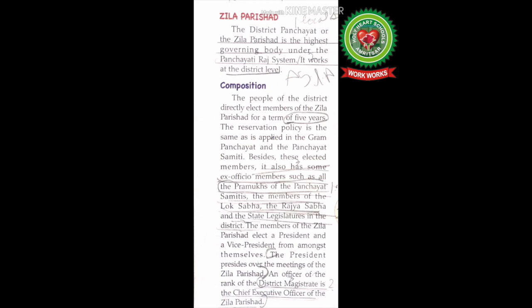The president presides over the meetings of the Jila Parishad. An officer of the rank of District Magistrate is the Chief Executive Officer of the Jila Parishad. So the president chairs the meetings, and the CEO — Chief Executive Officer — is the District Magistrate.